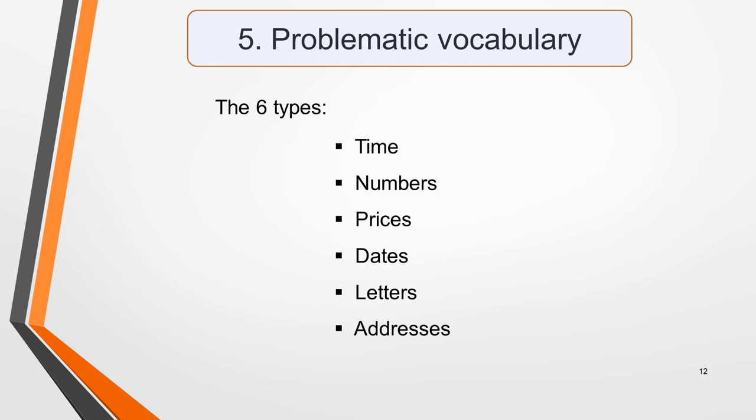There are six types of vocabulary that can cause particular problems for students, and some of them are regularly used in short answer questions. The six types are: time, numbers, prices, dates, letters and addresses. You must be able to recognise them in speech and to write them correctly in your answers. I've written a whole lesson on this topic, including eight listening exercises, to help you recognise and learn these types of vocabulary. I've put a link to it in the notes below this video.